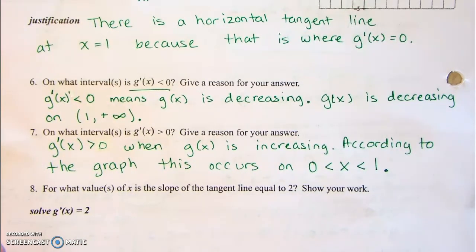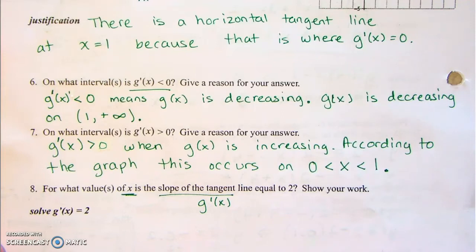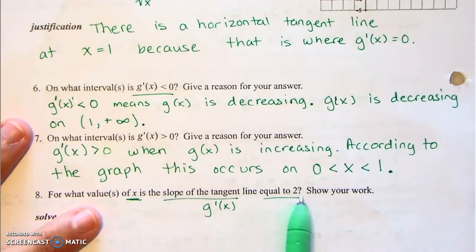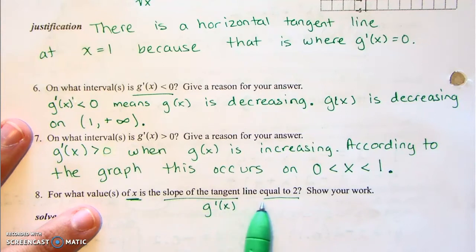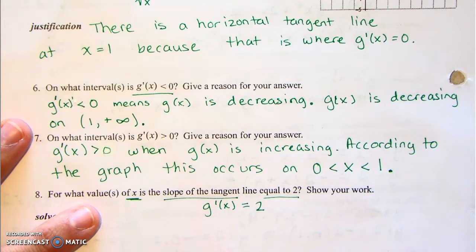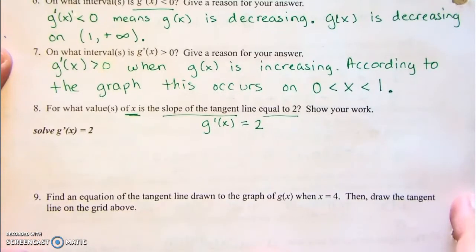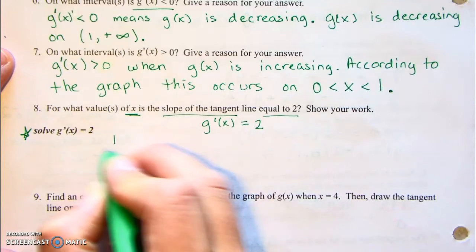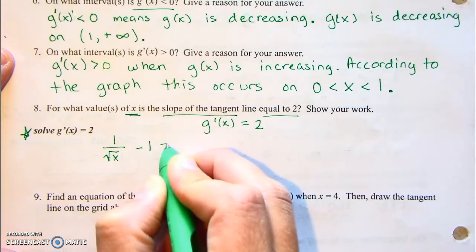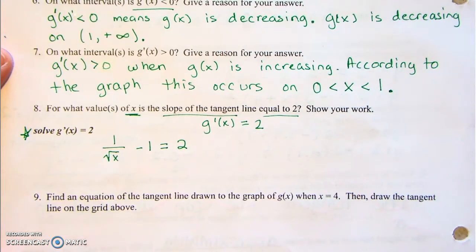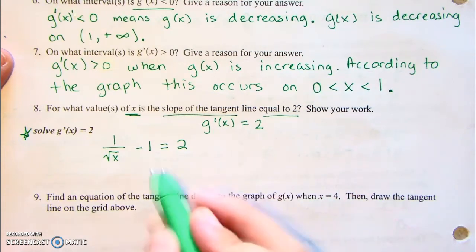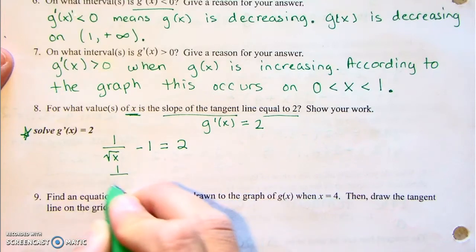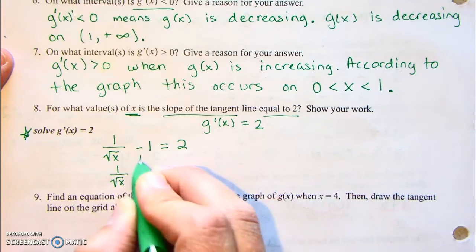For what values of x is the slope of the tangent line equal to 2? We take our derivative and set it equal to 2 to find x. So 1 over the square root of x minus 1 equals 2. Adding 1 gives 1 over the square root of x equals 3.